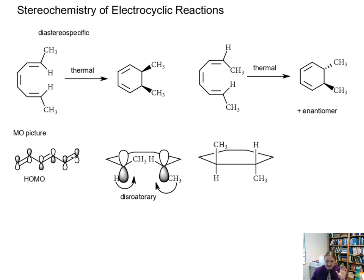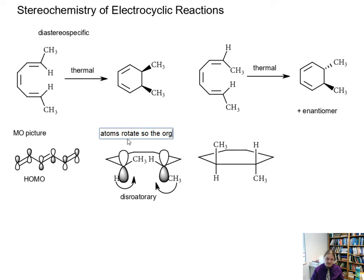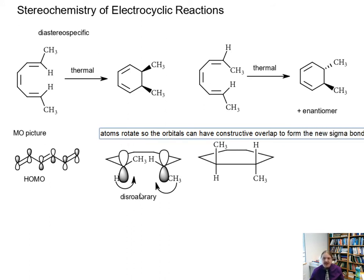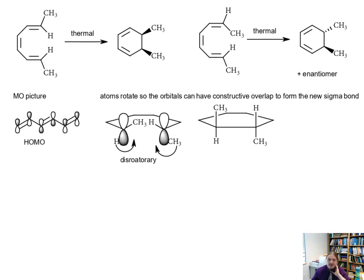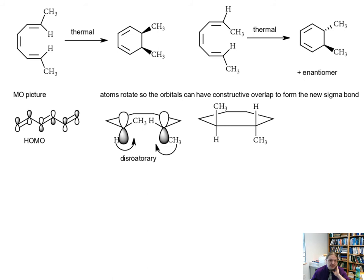This molecular orbital picture helps explain the origin of this stereochemistry difference. The atoms rotate so that the orbitals can have constructive overlap to form the new sigma bond. Now let's look at a different one.